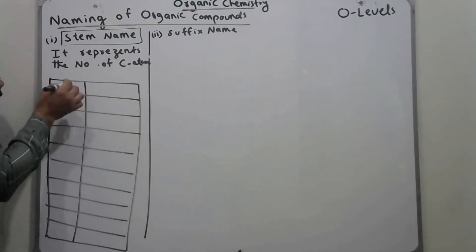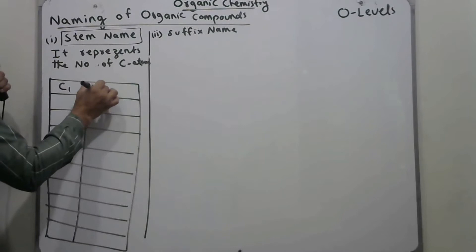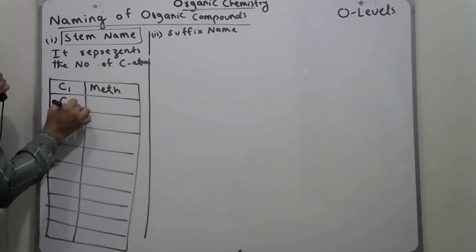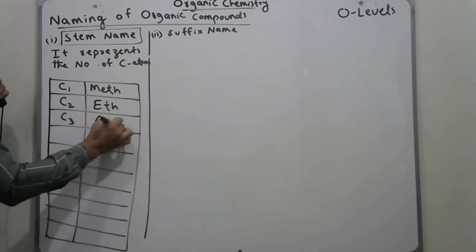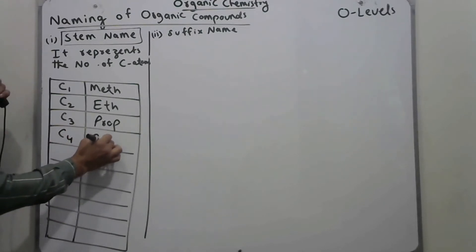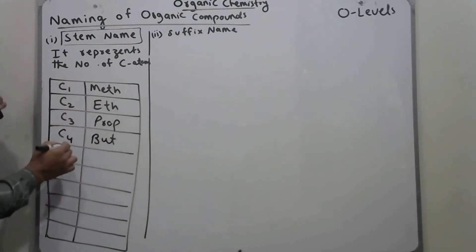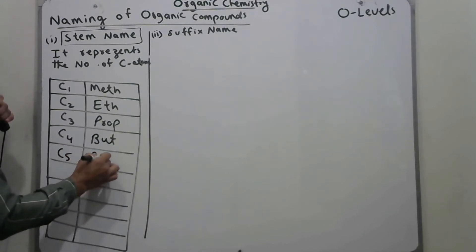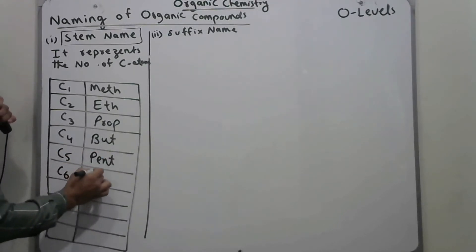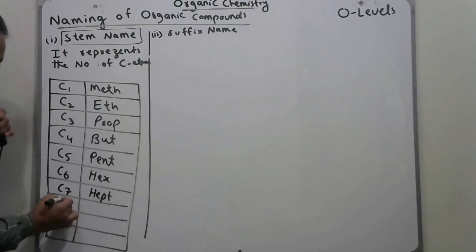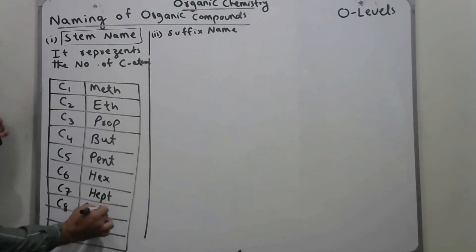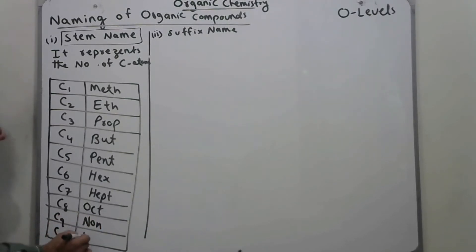If any organic compound has one carbon, it is named 'meth'; for two carbons, 'eth'; for three carbons, 'prop'; for four carbons, 'but'; for five carbons, 'pent'; for six carbons, 'hex'; for seven carbons, 'hept'; for eight carbons, 'oct'.